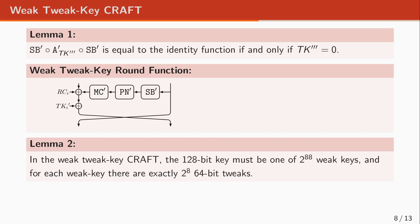Therefore, for the current tweak key schedule of CRAFT with the proposed Q permutation, the 128-bit key must be one of 2^88 weak keys, and for each weak key there are exactly 2^8 weak tweaks. We emphasize that the Q permutation plays an important role in determining the size of the sets of weak keys and weak tweaks. In the paper we showed that depending on the Q permutation, the size of the weak key set can vary from 2^68 to 2^96.